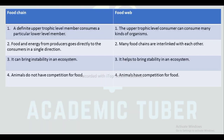Differences between food chain and food web: In a food chain, a definite upper trophic level member consumes members of a particular lower level, whereas in a food web, upper trophic level consumers can consume many kinds of organisms. In a food chain, food and energy go from producers directly to consumers in a single direction, whereas in a food web, many food chains are interlinked. A food chain can bring instability in an ecosystem, whereas a food web helps bring stability. In a food chain, animals do not have competition for food, whereas in a food web, animals have competition for food.